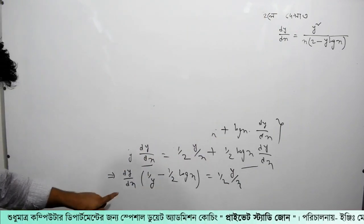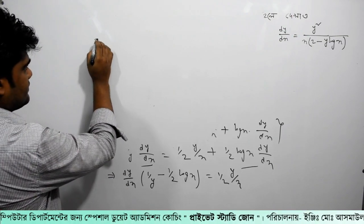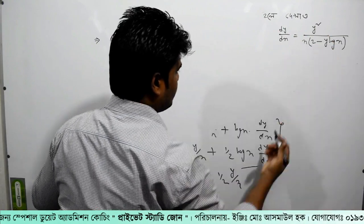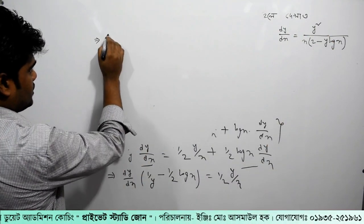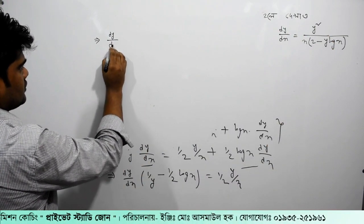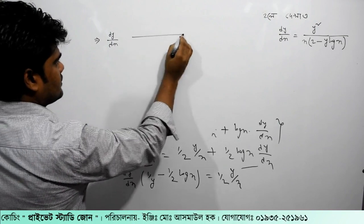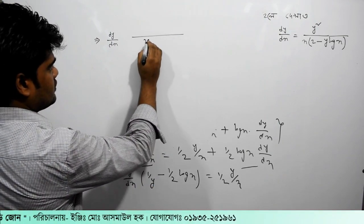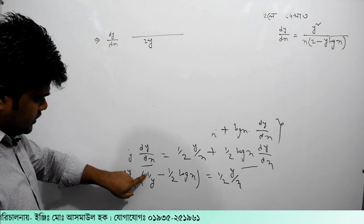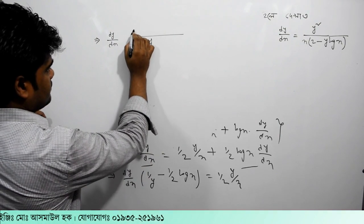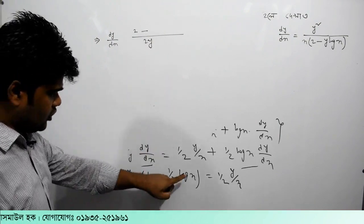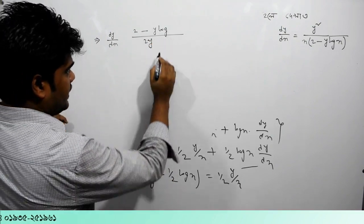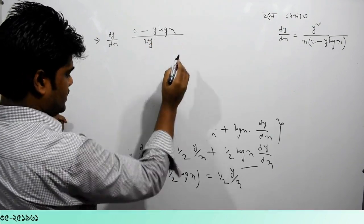So I will now do dy by dx. I will tell you that. dy by dx — how do you say? 2ry. How do you say? 2. Minus. How do you say? y log x.